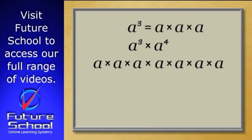Well, if we count the a's, we get a to the power of 7. Without multiplying all the a's out, how can we do this problem more quickly? Did you notice that if we add the indices 3 and 4, we get 7?